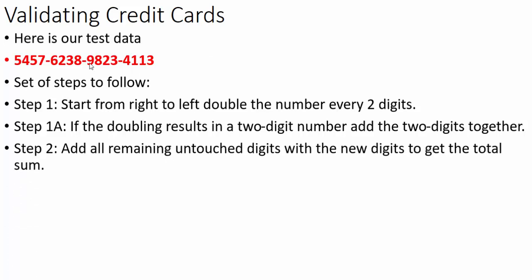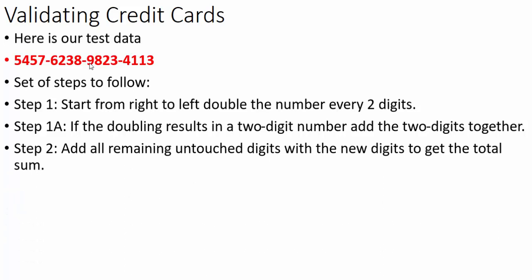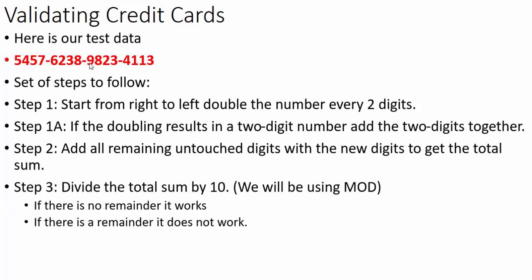Now we add all the remaining untouched digits with the new digits to get the total sum. This is where the Mod 10 comes in. We divide the total sum by 10 using Mod, which simply gives us a remainder. If there is no remainder, then the credit card is valid. If there is a remainder, then it does not work and it's considered invalid.